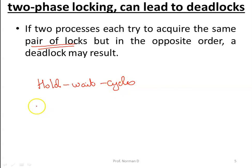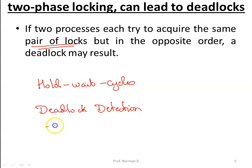Deadlock detection is also possible by maintaining an explicit graph of which processes hold which locks and want which locks, then checking the graph for cycles. Finally, when it is known in advance that a lock will never be held longer than t seconds, a timeout scheme can be used.